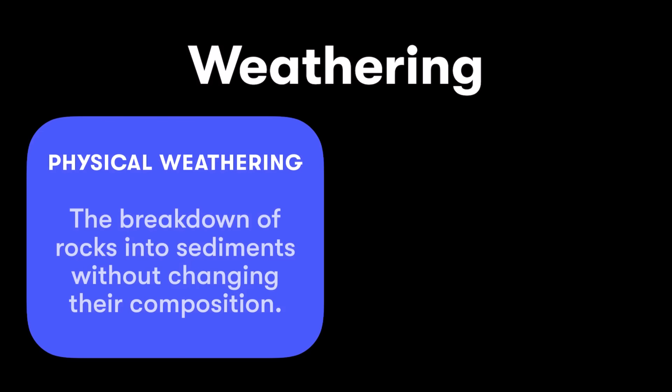For the rest of this video, we're going to focus specifically on weathering and start by looking at the two main types. The first is called physical weathering, also often known as mechanical weathering — physical and mechanical are the same thing. This is the breakdown of rocks into sediments without changing their composition, literally changing the size and shape of a rock.